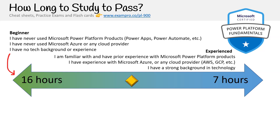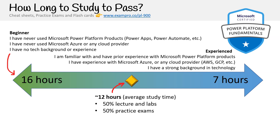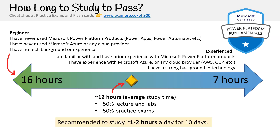On average, most people are going to take about 12 hours to study for this course. The content is going to be 50% lecture and labs — we call them follow-alongs — where the idea is you follow along in your own account. The other 50% is practice exams. The length of the content is around three hours, so you should spend as much time doing practice exams to pass. The recommended study time is about one to two hours a day for roughly 10 days.